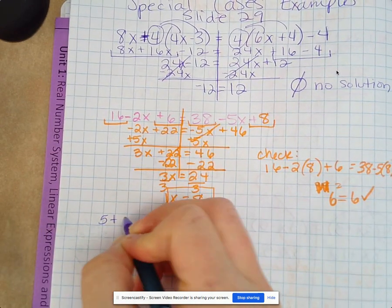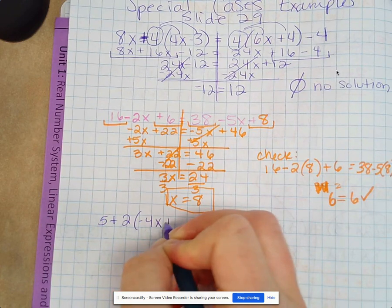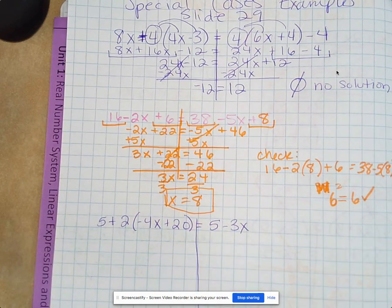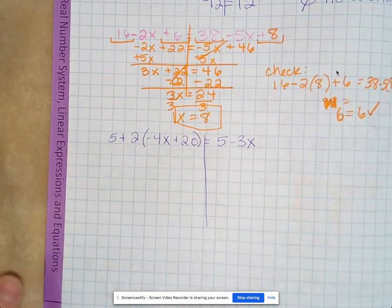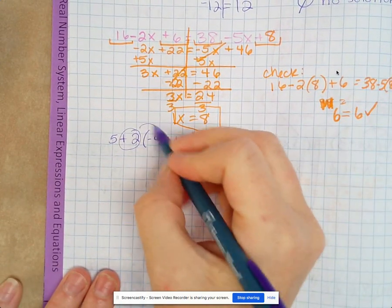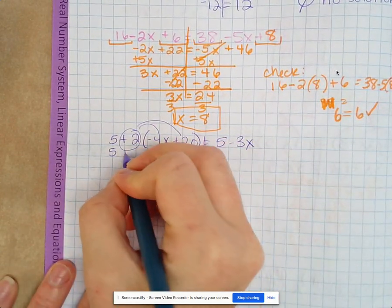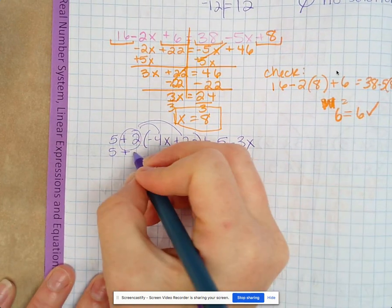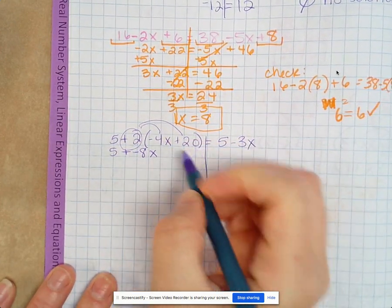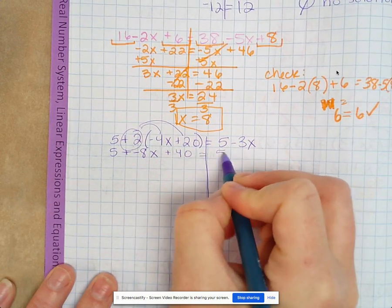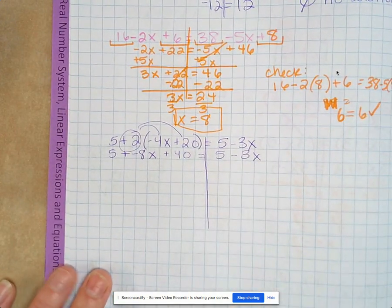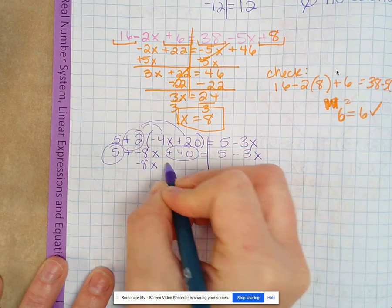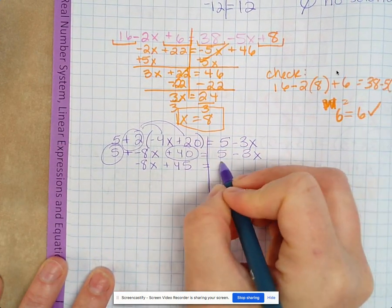Okay, the next one is 5 plus 2 times negative 4x plus 20 equals 5 minus 3x. So we distribute the 2. So we still have this 5 plus, you have to distribute the 2 first because of order of operations. So 2 times negative 4 is negative 8x, 2 times 20 is plus 40 equals 5 minus 3x. Then combine what you can. So 5 plus 40, so negative 8x plus 45 equals 5 minus 3x.